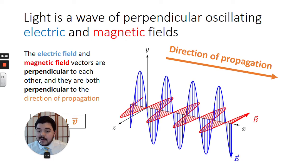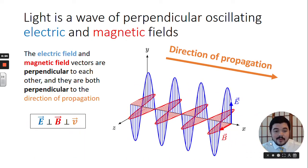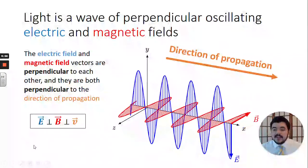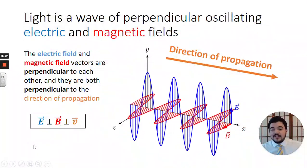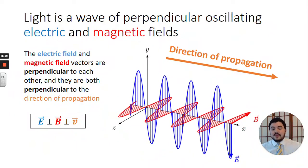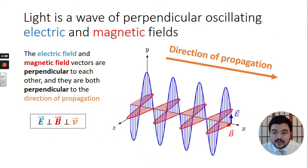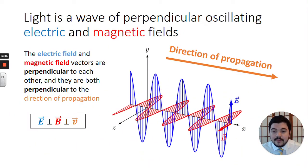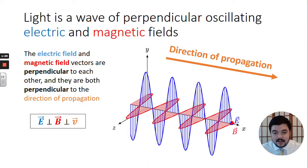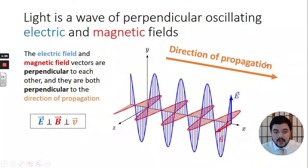We can write that more succinctly saying that our E field is perpendicular to our B field, which is perpendicular to our velocity arrow — the velocity of the wave.